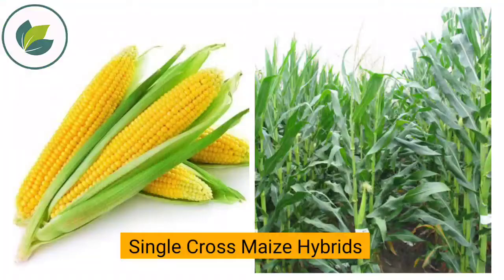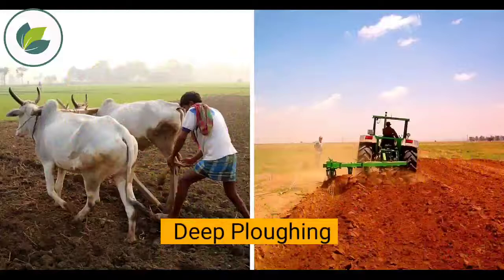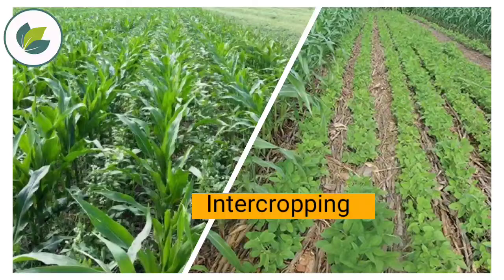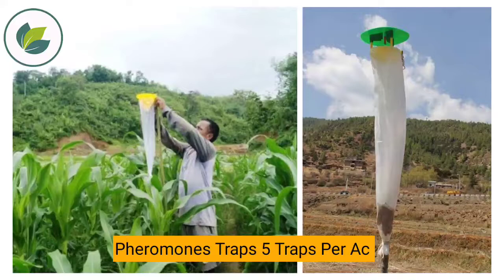For controlling fall armyworm pest, integrated pest management should be followed. Selection of single-cross maize hybrid and choosing cultivars with tight husk covers is recommended. Deep plowing before every crop season and intercropping in maize with suitable pulse crop for the particular region. Installation of pheromone traps is a major practice.